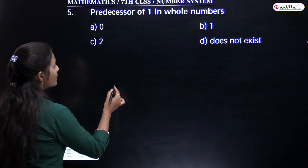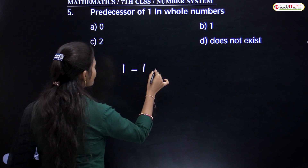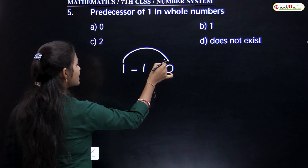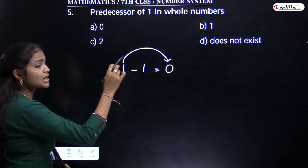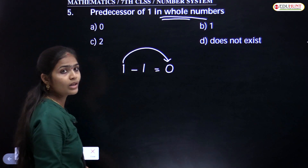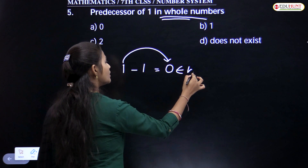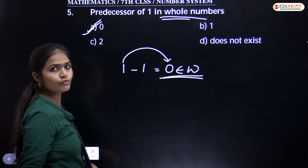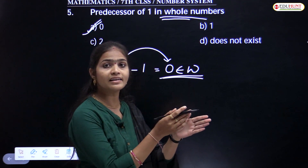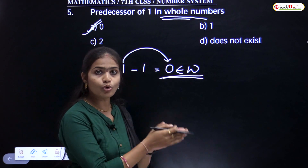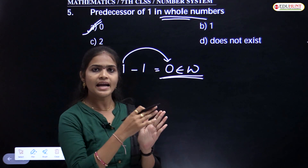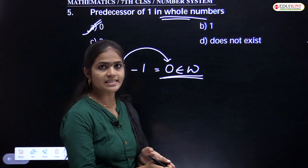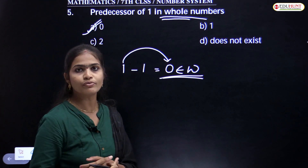Predecessor of 1 in whole numbers. 1 minus 1 equals 0. So the predecessor of 1 is 0. Here we have to check the type of numbers — they mentioned whole numbers, and 0 is a whole number. That is why the answer is 0. In natural numbers only, the predecessor of 1 does not exist. In whole numbers and integers, the predecessor of 1 exists.